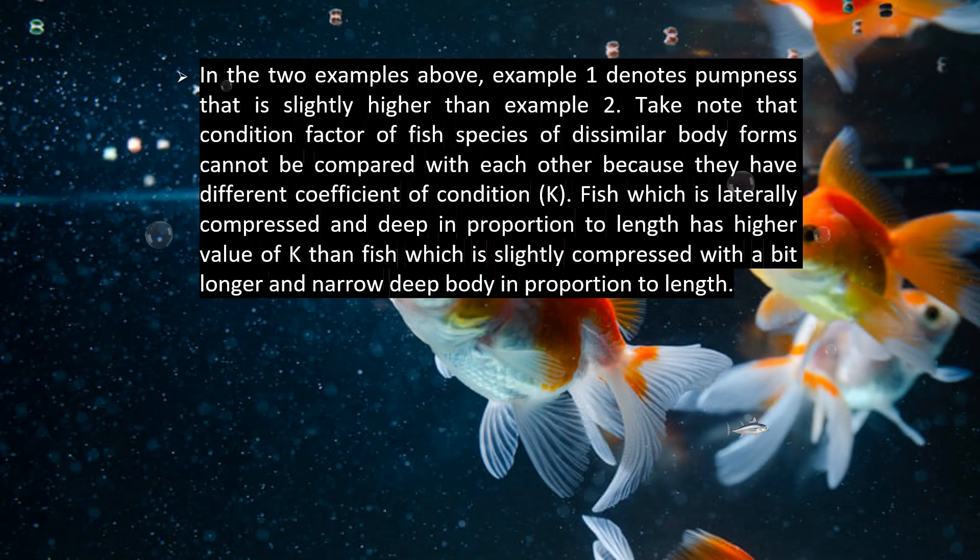In the two examples from the other slide, example 1 denotes plumpness that is slightly higher than example 2. Note that the condition factor of fish species of dissimilar body forms cannot be compared with each other because they have different coefficients of condition. Fish which is laterally compressed and deep in proportion to length has a higher value of K than fish which is slightly compressed with a longer and narrow deep body in proportion to length.